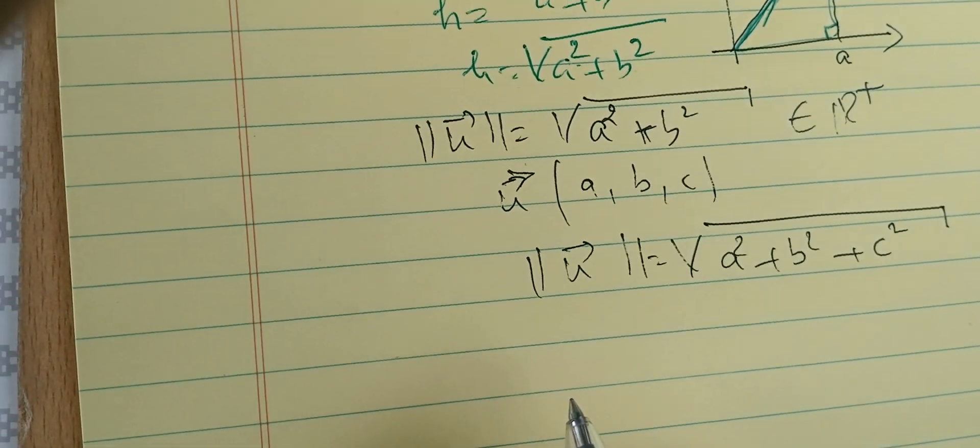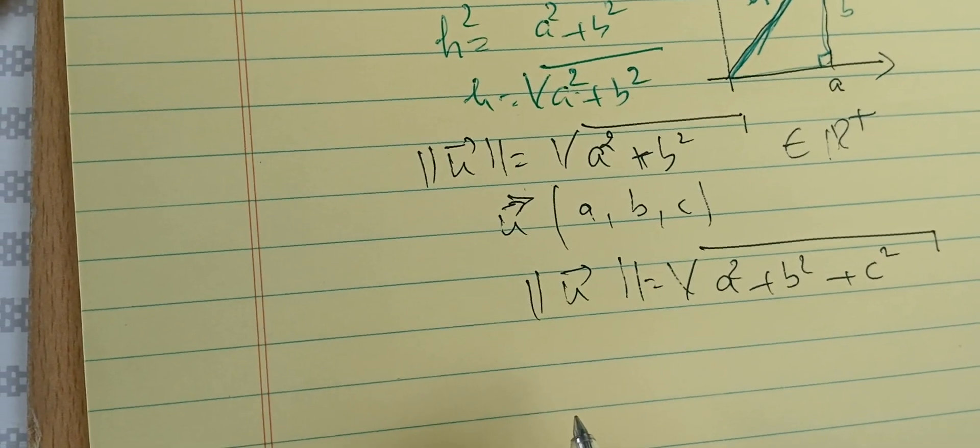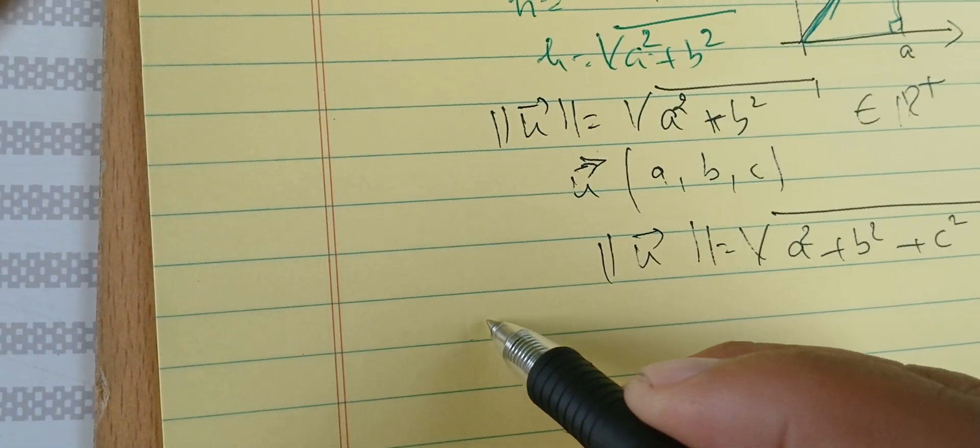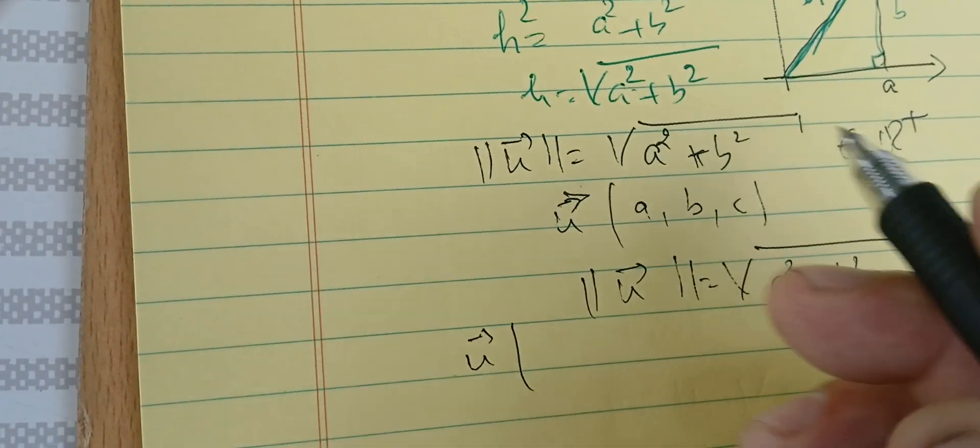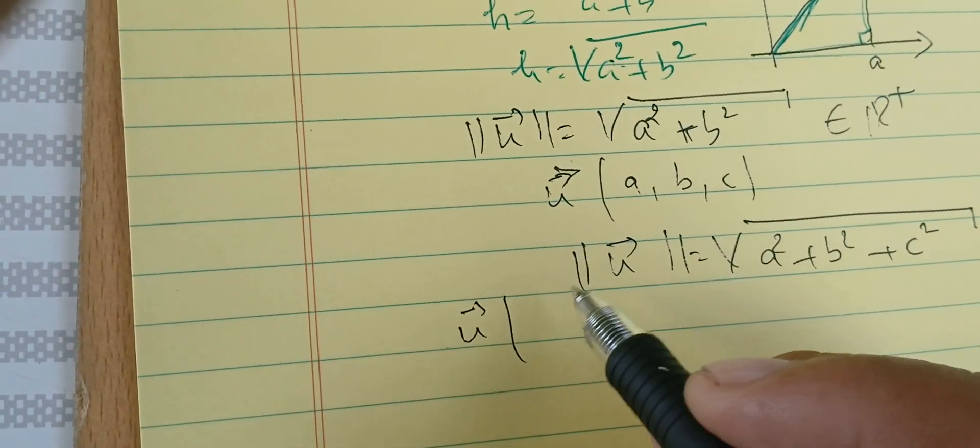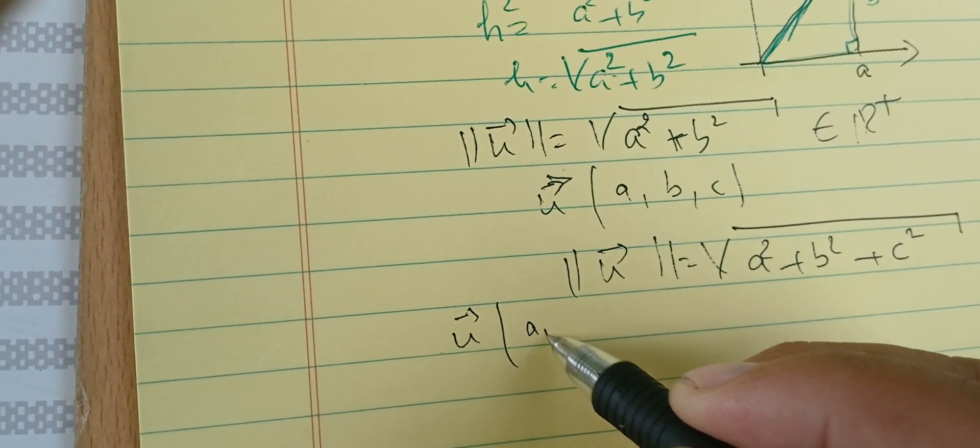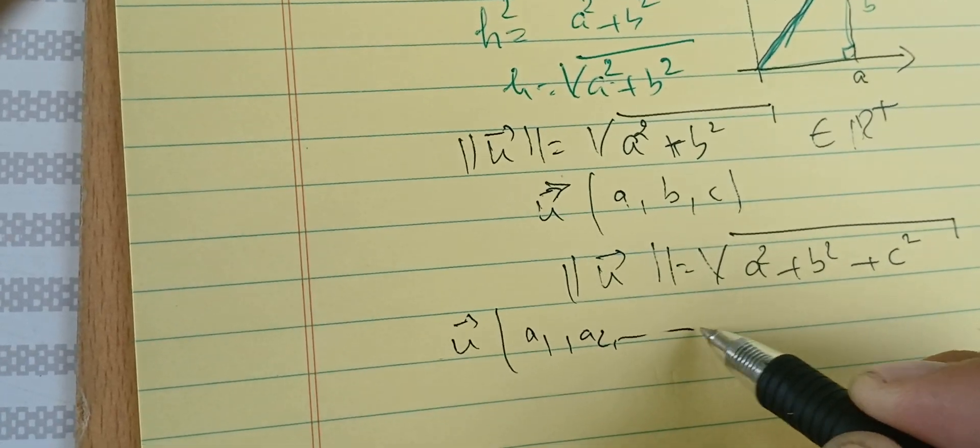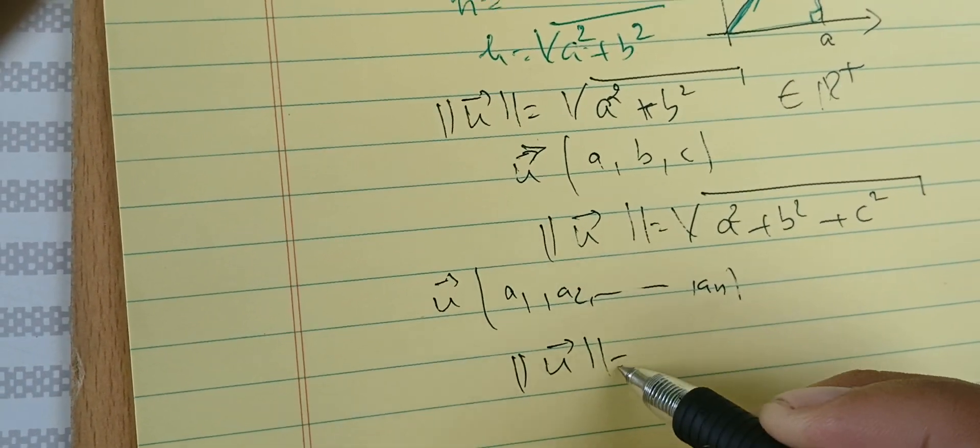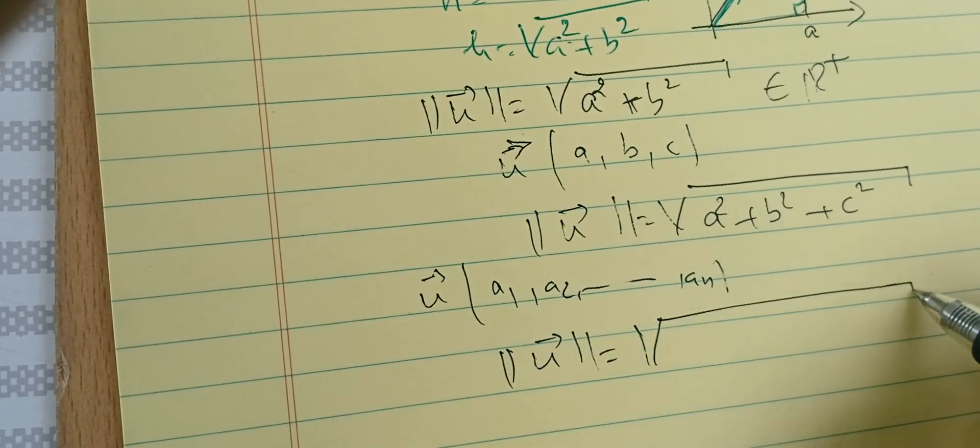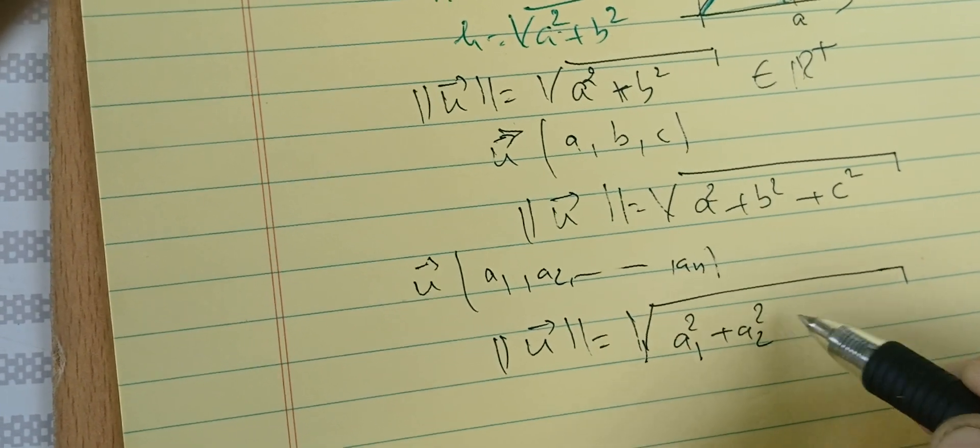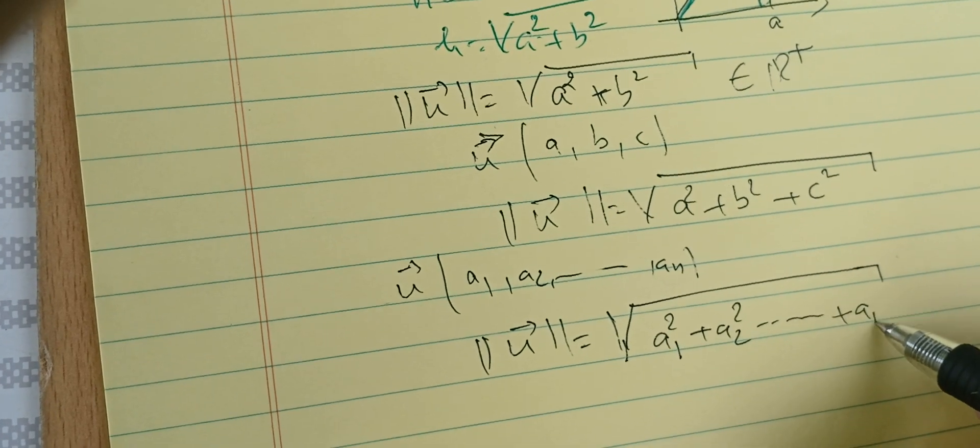If I have a vector u in Rⁿ, it has n components. Let's denote them by a₁, a₂, ..., aₙ. In this case, I can define the norm as the square root of a₁² + a₂² + ... + aₙ².